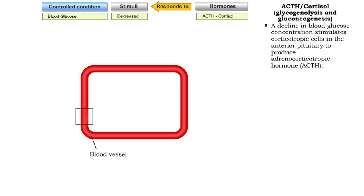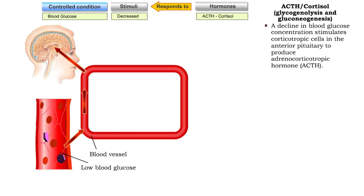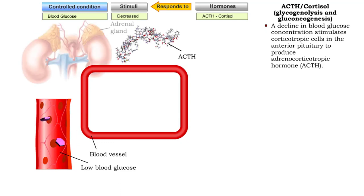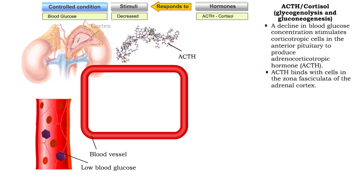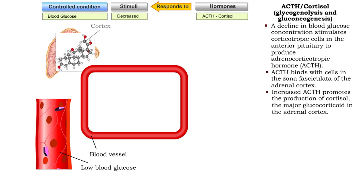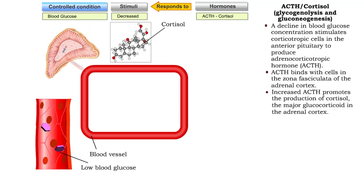A decline in blood glucose concentration stimulates corticotropic cells in the anterior pituitary to produce adrenocorticotropic hormone, ACTH. ACTH binds with cells in the zona fasciculata of the adrenal cortex and promotes the production of cortisol, the major glucocorticoid in the adrenal cortex.